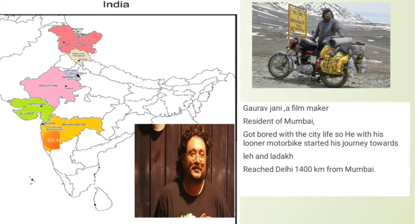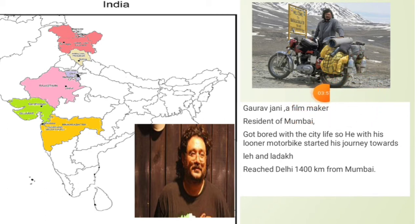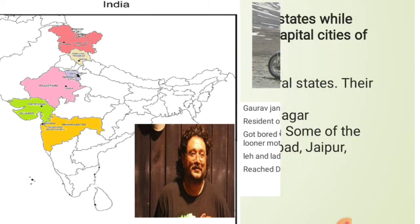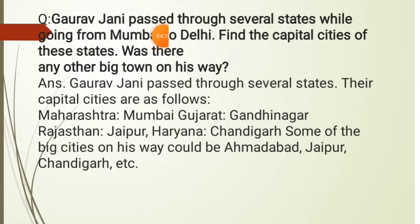From Mumbai he first reached Delhi, which is 1400 kilometers away. He had so many things packed with him: a small tent, sleeping bag, plastic sheet, warm clothes, food that would remain fresh for some days, a camera, extra cameras, and extra cans of petrol. After packing more things in Delhi, after two days he reached Manali. Gaurav Jani passed through several states going from Mumbai to Delhi — find the capital cities of these states.